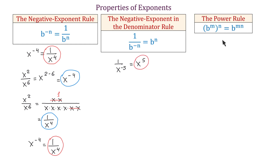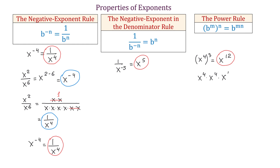The next rule is the power rule: b to the m's power raised to the n's power equals b to the power of m times n. So when an exponential expression is raised to another exponent, these two exponents will be multiplied. For example, x to the fourth power raised to the third power equals x to the twelfth power. We multiply the exponents, and that is because x to the fourth power raised to the third power can be written as x to the fourth times x to the fourth times x to the fourth. Then according to the product rule, if we add these exponents, we will get x to the twelfth power.